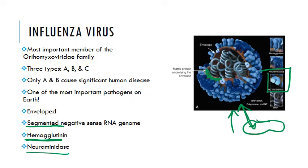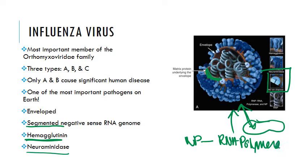The genome of the influenza virus consists of eight different helical nucleocapsid segments. Each segment has its own nucleocapsid and contains a negative-sense RNA associated with a nucleoprotein — NP — and the transcriptases, which are basically the RNA polymerases, labeled PB1, PB2, and PA.